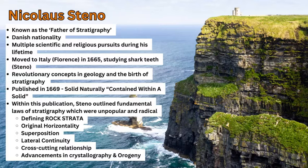Steno defined what a rock strata and rock layer is — the first time anyone had done that. This was radical and unpopular with the church at the time, since the church was saying the Earth is very young based on Bible teachings. Steno said no, it must be older because of these processes he was identifying. He looked at original horizontality, which means rock layers were deposited in a horizontal position due to gravity. Then there is the relative age of rock — superposition — meaning the top or youngest rock is closest to the surface and as you go deeper, the relative age increases and becomes older.